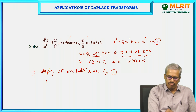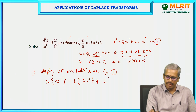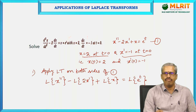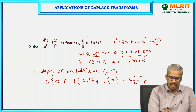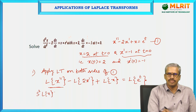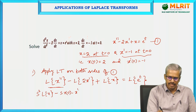Taking Laplace transform on both sides: L{x''} minus 2·L{x'} plus L{x} equals L{e^t}. We have the formula for L{x''}: it can be written as s²·L{x} minus s·x(0) minus x'(0).